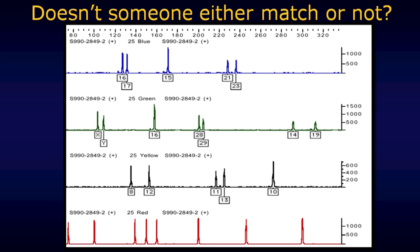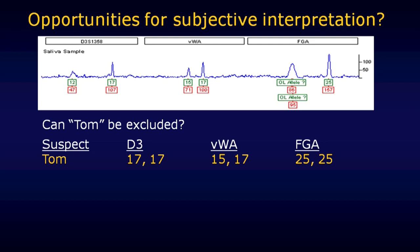Sometimes with a DNA profile like this, interpreting the testing results can be very easy. So easy, in fact, that there really isn't any question as to whether or not an individual might or might not match this particular DNA profile. But not every evidence sample looks like a reference sample, and in fact very often they look quite a bit different. This next slide shows you an electropherogram that was generated from an actual evidence sample.